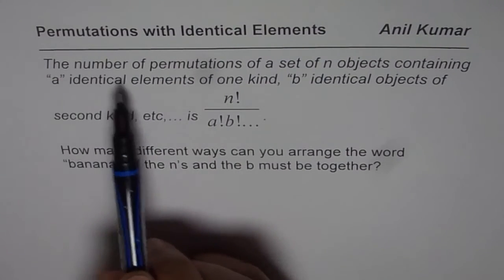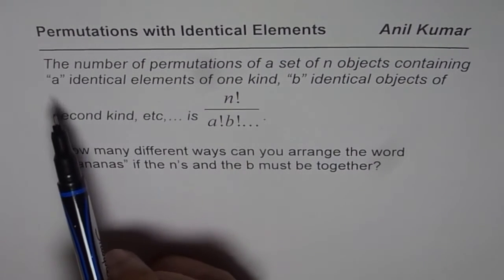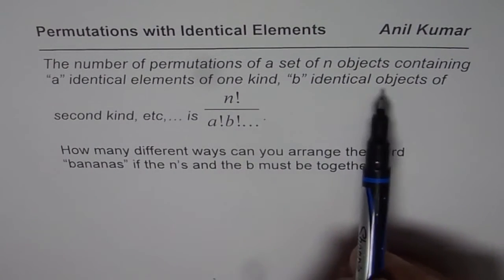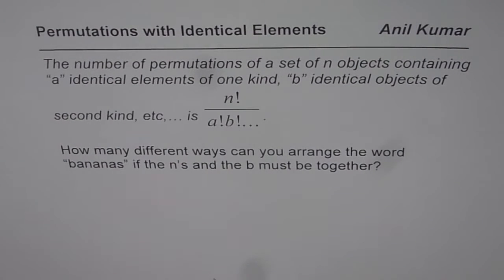The number of permutations of a set of n objects containing 'a' identical elements of one kind, 'b' identical elements of second kind, etc., is n factorial divided by a factorial times b factorial.